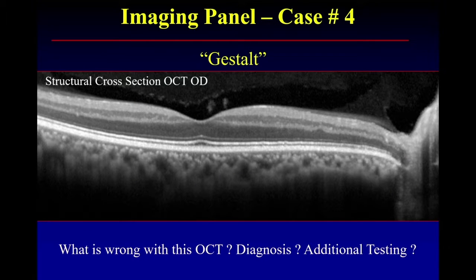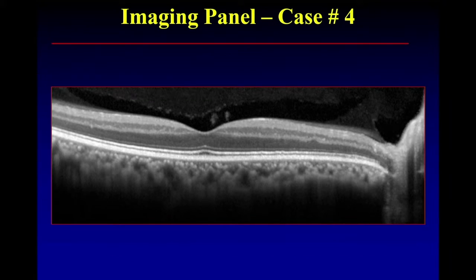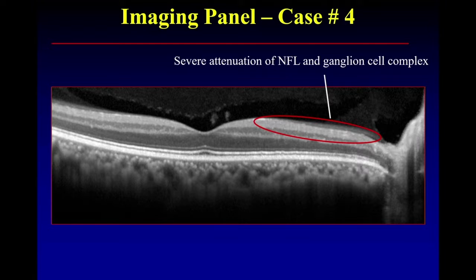Brandon, I call this case 'gestalt' because we like to focus on the outer retina and the choroid, but sometimes you have to look at the whole scan. What's wrong? This case draws attention not to what's positive and abnormal, but to what's missing. Once you see it, it's obvious, but it's not always hitting you over the head — the nerve fiber layer and ganglion cell layer is completely absent in that eye.